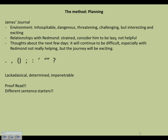Now for my plan. The environment: inhospitable, dangerous, threatening, challenging, but interesting. From each bullet point I've noted down brief ideas. Thoughts about the next few days: it will continue to be difficult, especially with Redmond not really being there. I've noted key phrases, the punctuation I wish to use, and things to remember when proofreading, such as using different sentence starters.